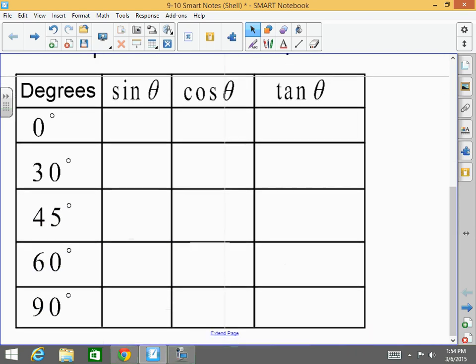So, the sine of 0 is 0. The cosine of 0 is 1. And the tangent is also 0. Sine of 30 is 1 half. How did I get that, though, Mr. Morrill?